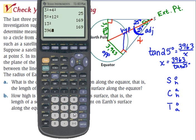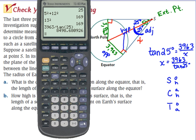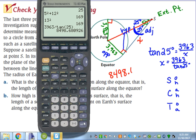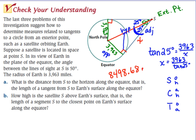3,963 divided by the tangent of 25 degrees gives us approximately 8,498.68 miles. So that satellite is about 8,498 miles away from the Earth's surface along the tangent. This was a good problem to tie everything in with exterior tangents and a little trig review.